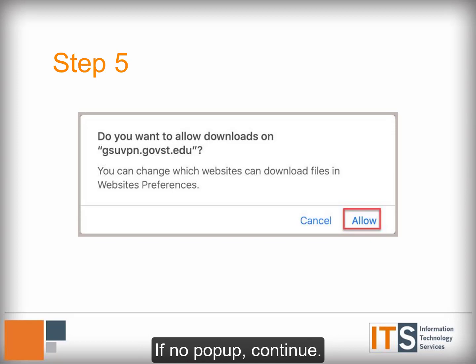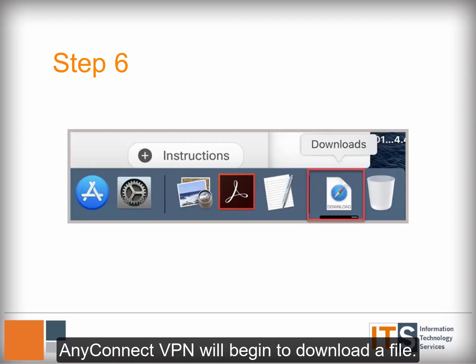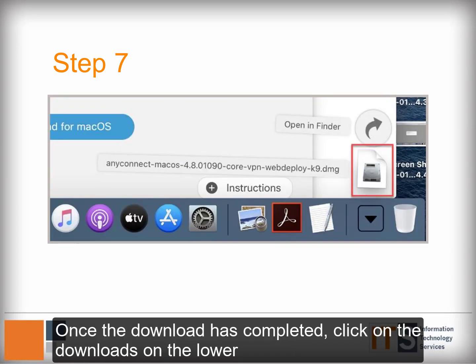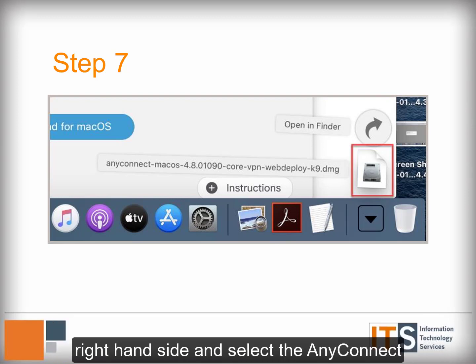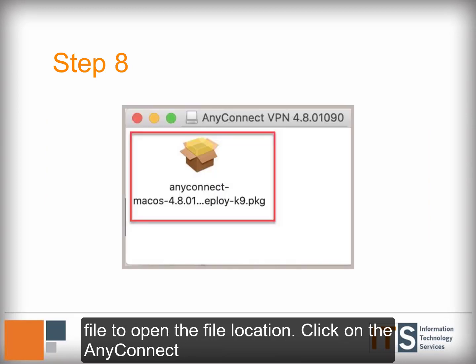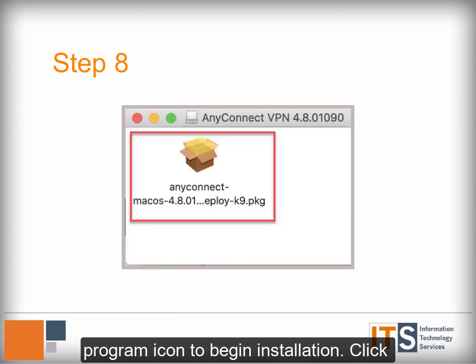If no pop-up appears, continue. AnyConnect VPN will begin to download a file. Once the download has completed, click on Downloads in the lower right-hand side and select the AnyConnect file to open the file location.